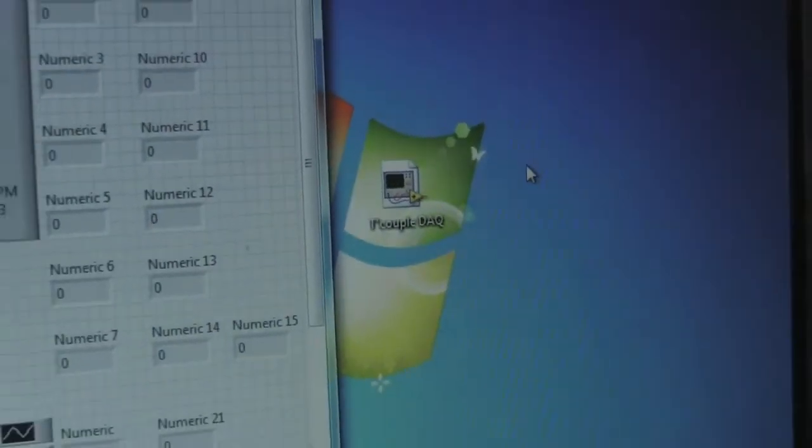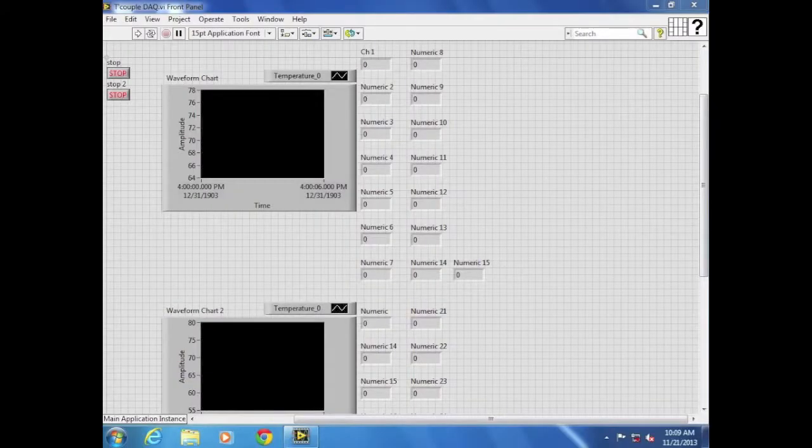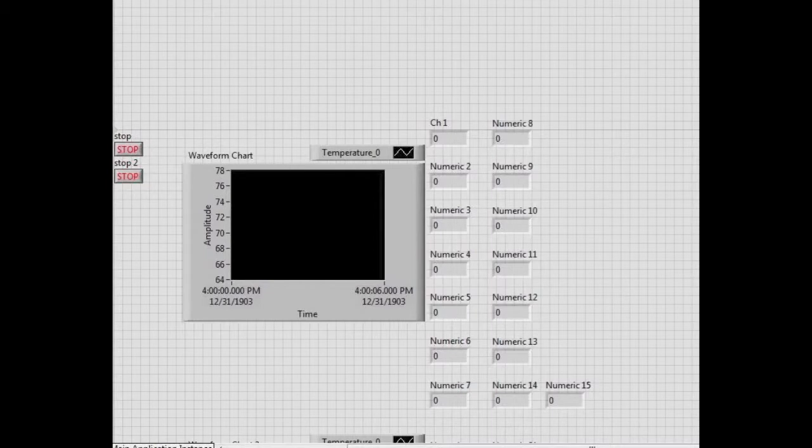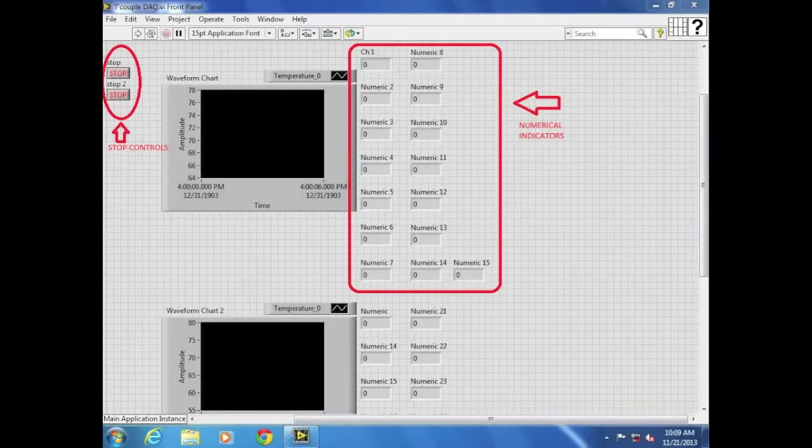This will bring up the configured front panel window. The front panel displays any controls that have been constructed in the block diagram. Here is the waveform chart. Here is waveform chart 2. Here are the stop controls, and here are the numerical indicators.